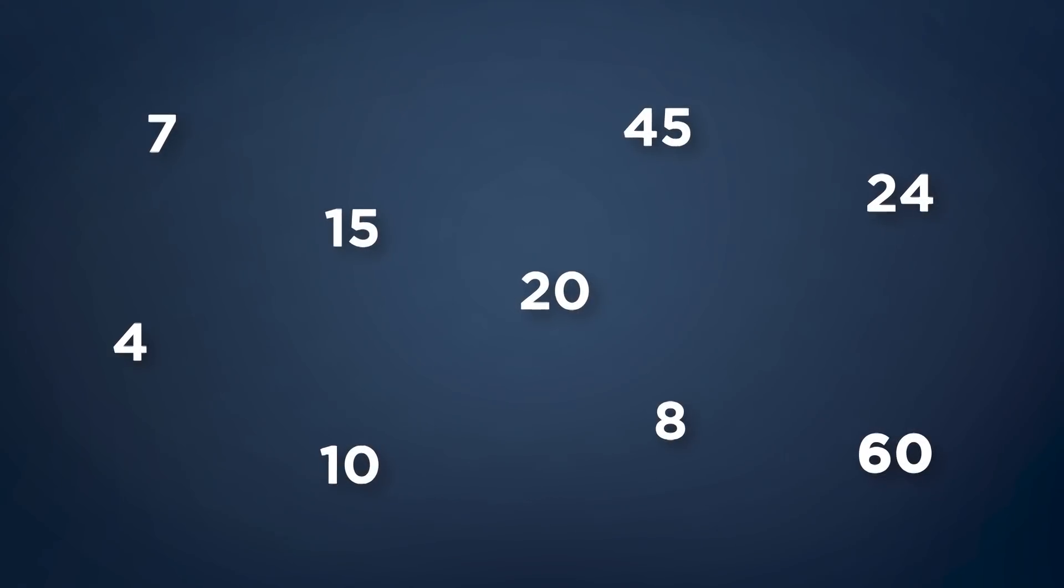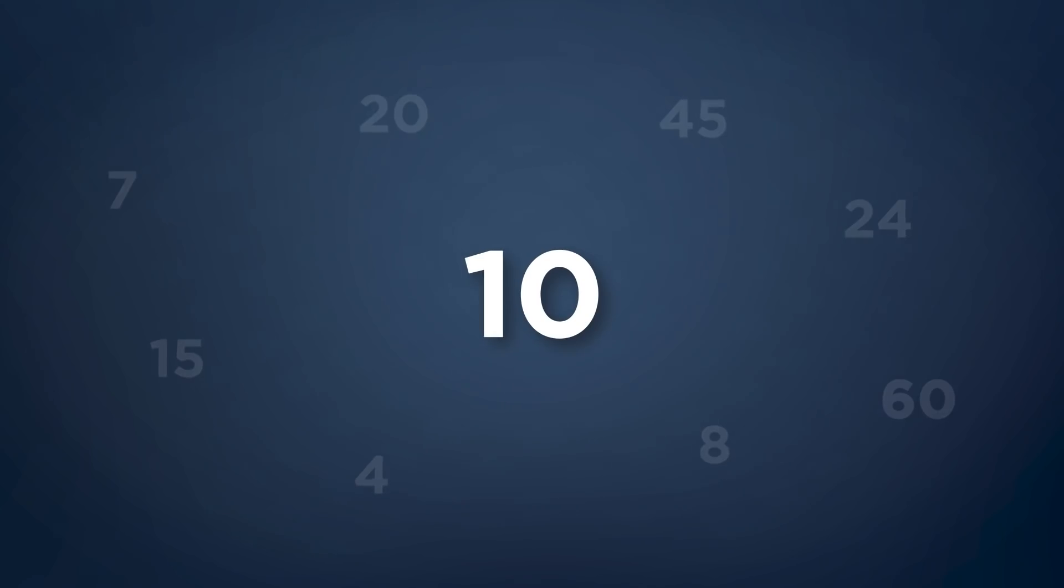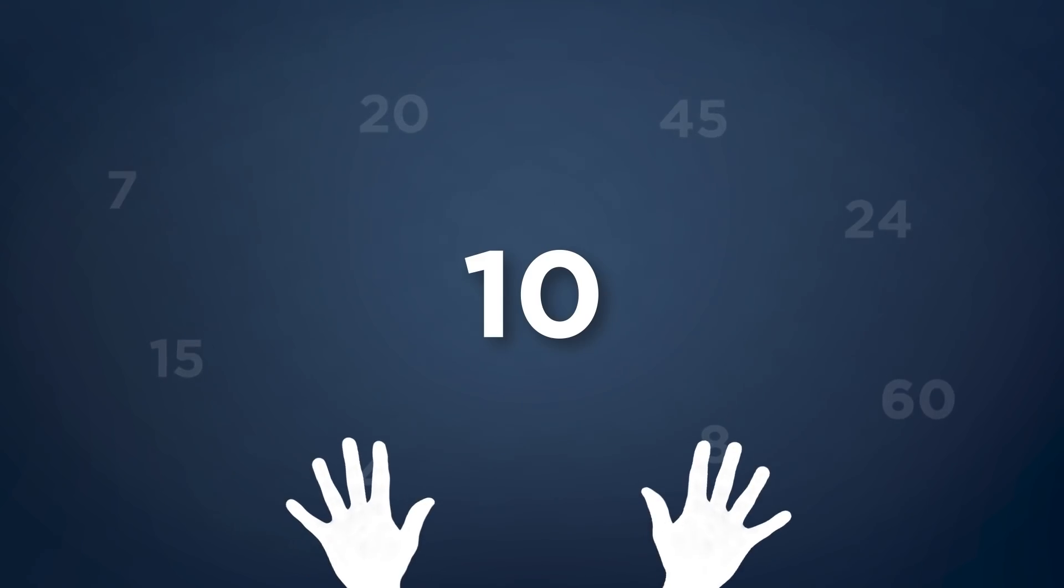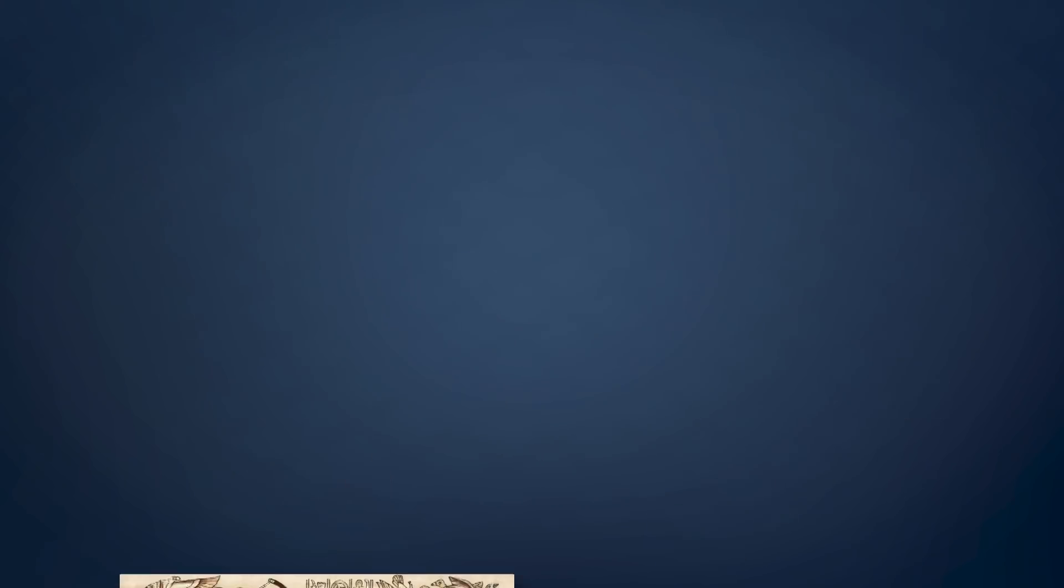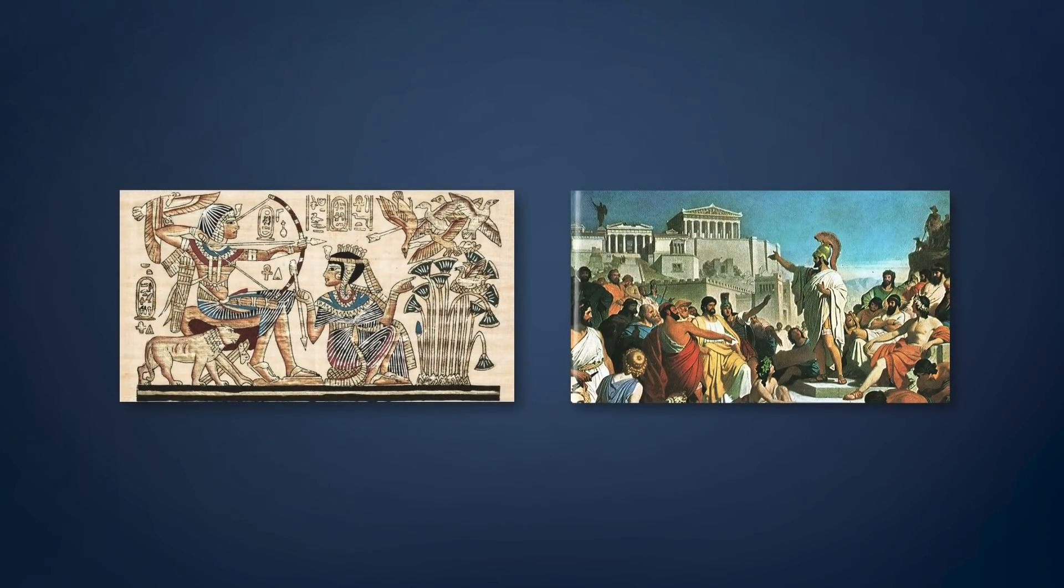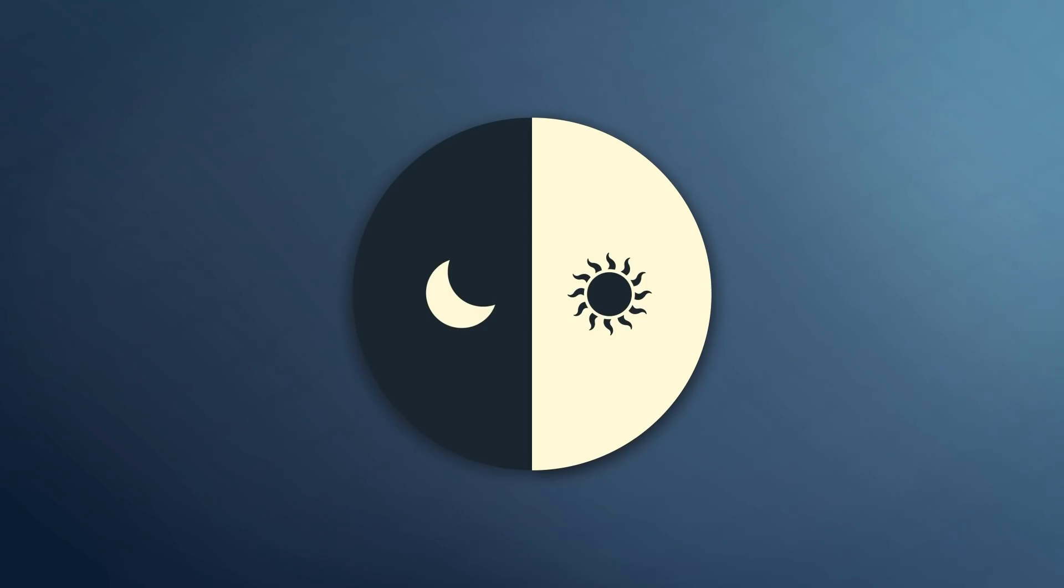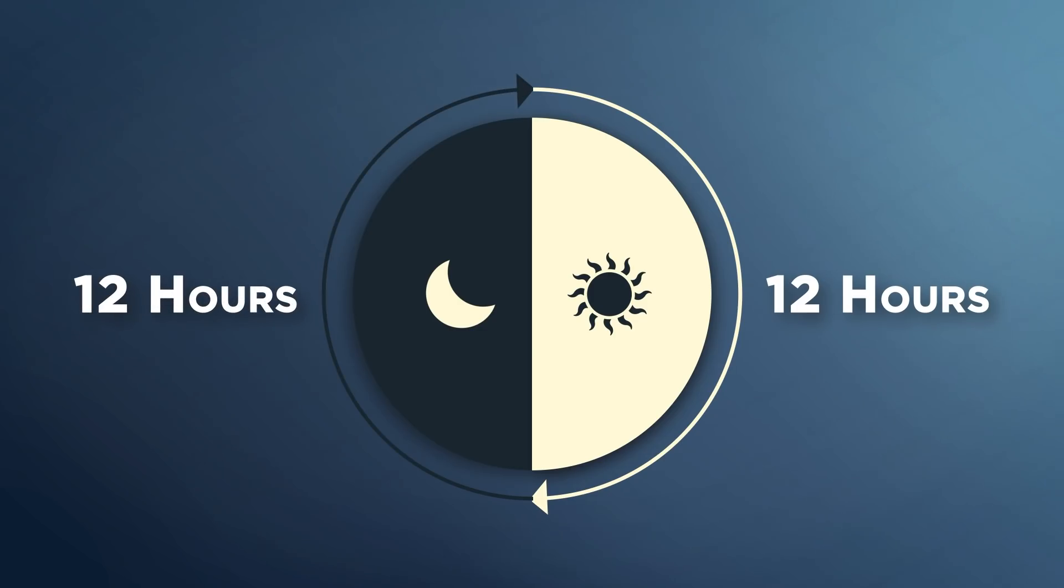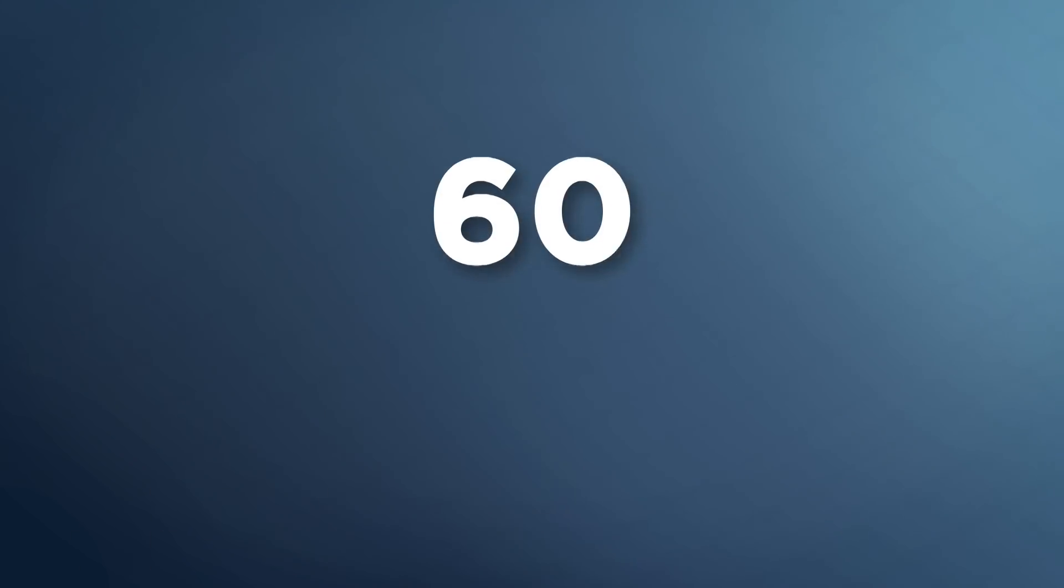While the most widely used numeral system on Earth is the decimal or base 10 system, a system that most likely originated because it was easy for humans to count using all 10 of their fingers, ancient civilizations such as the Egyptians and the Greeks first divided the day into smaller parts based on a base 12 and base 60 system that we continue to use to this day.